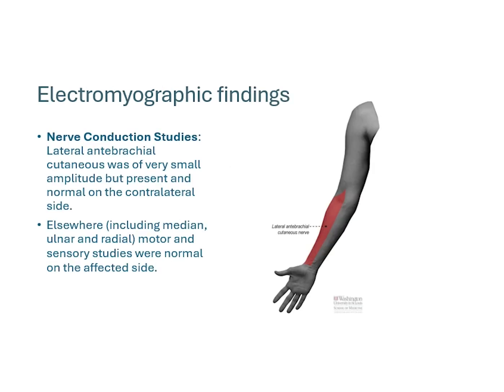We went on to perform electromyographic testing. On nerve conductions, largely normal, including median, ulnar, and radial motor and sensory studies of the affected side. We were unable to get a lateral antebrachial cutaneous response — we did obtain one, but it was quite small compared to the contralateral side, which was normal, and we tested it given that he had some numbness descriptors in that region.